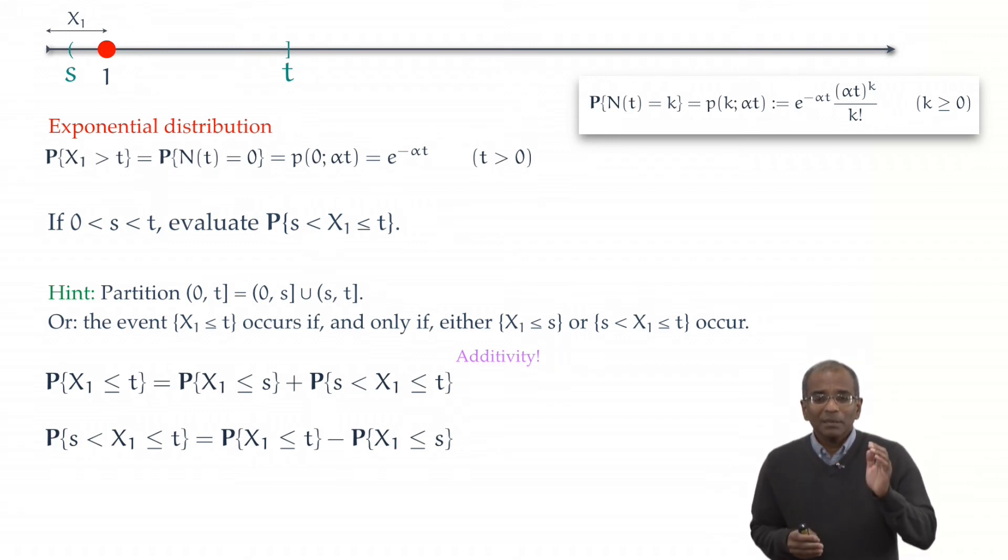The two probabilities on the right deal with probabilities where the first arrival is at or before a certain point in time. But we've already seen that the probability of the first arrival occurring after any given point in time is given in an exponential form. Now, all that remains is to invoke additivity once more to massage these probabilities on the right to get probabilities of the form that the arrival is after certain points in time. And here we go.